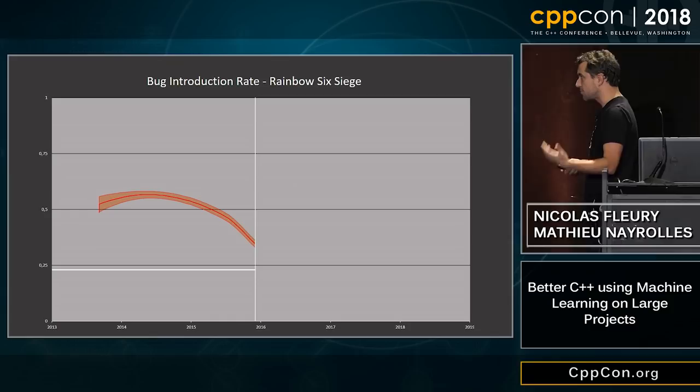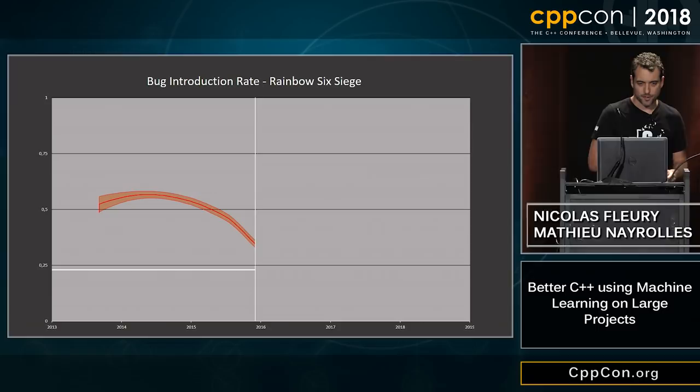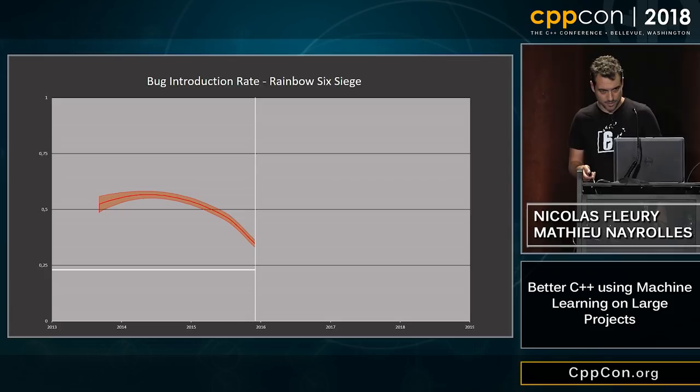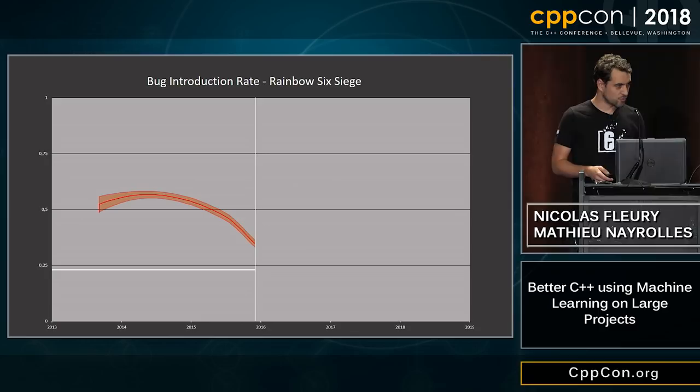Sometimes you improve things in data, sometimes you modify code as well. As we shipped the game — the white line being the ship date — we see the number of bug entries going down as we concentrated on fixes. We see a white line close to 25%, which is what research measures as an average for big open source projects. Looking at that, we thought maybe we can do better.